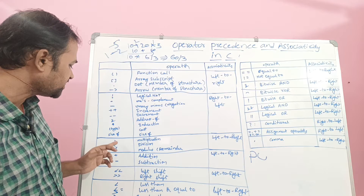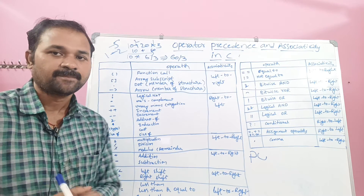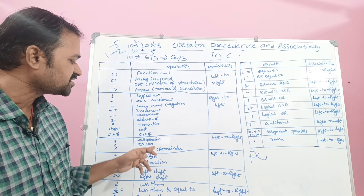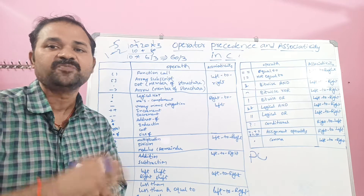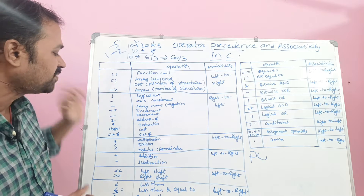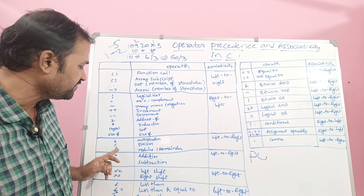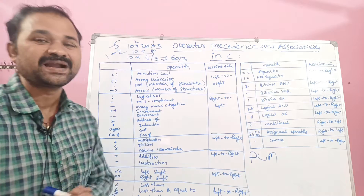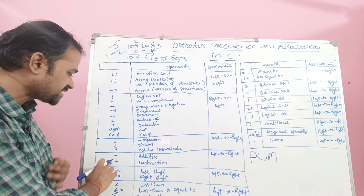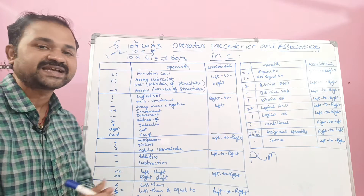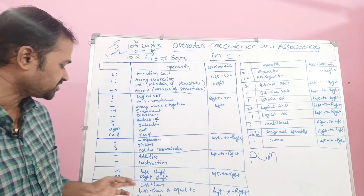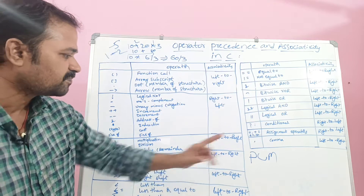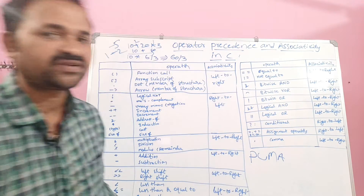Next is multiplication, division, and modulo operator — denoted as M. Multiplication, division, and modulo have equal priority, and their associativity is from left to right. After that come plus and minus — addition and subtraction — denoted as A. Plus and minus have lower priority than star, division, and modulo. The associativity for addition and subtraction is also from left to right.